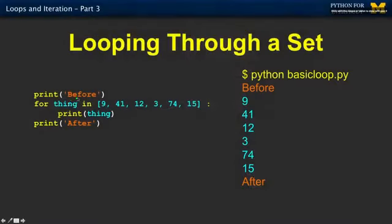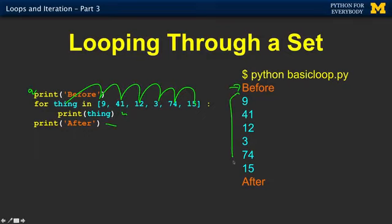Here's the little loop we're going to do, and I'm going to do this over and over again — you're going to get tired of these numbers. For some iteration variable in 9, 41, 12, 3, 74, 15. We print out before, so we're going to do something before the loop, something during the loop, and after the loop. Right now I'm just printing everything out so you can see how the loop works.